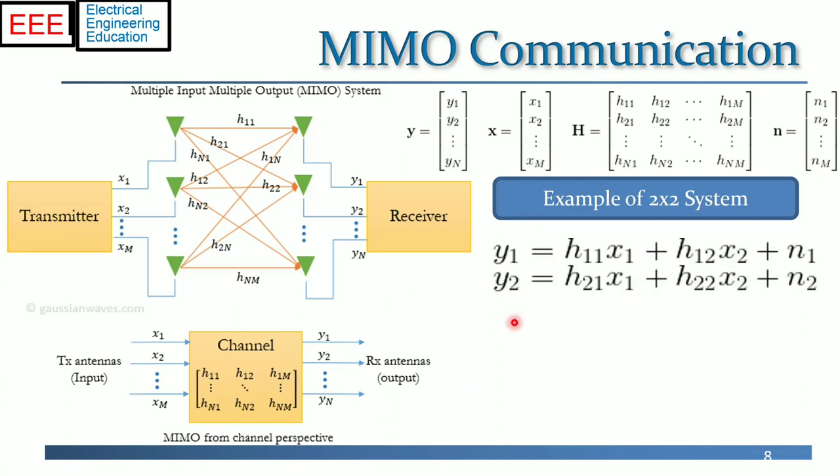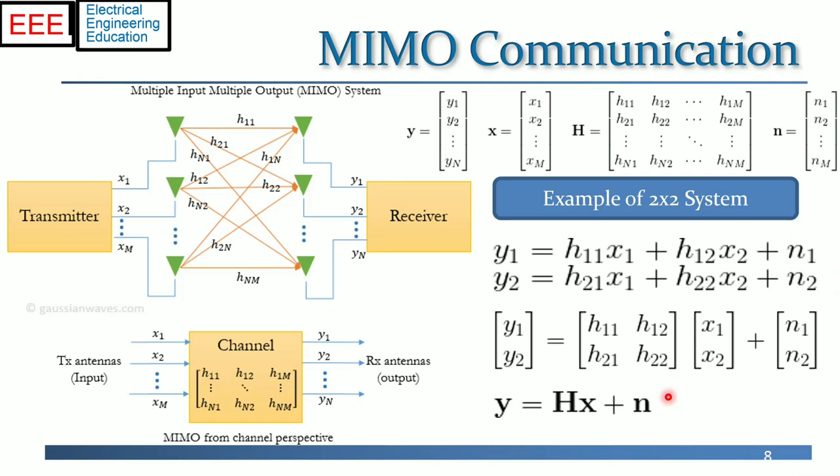For example of 2 by 2 MIMO system configuration, the received signal vector is expressed as shown. The receiver has to solve this set of equations to find out what was transmitted, that is, X.